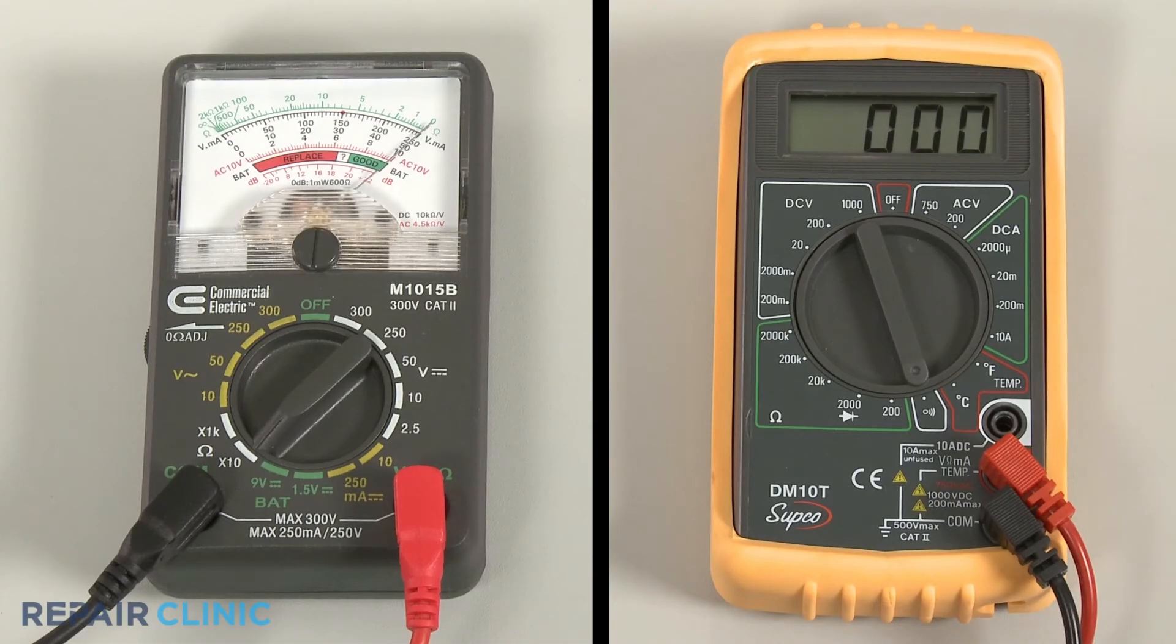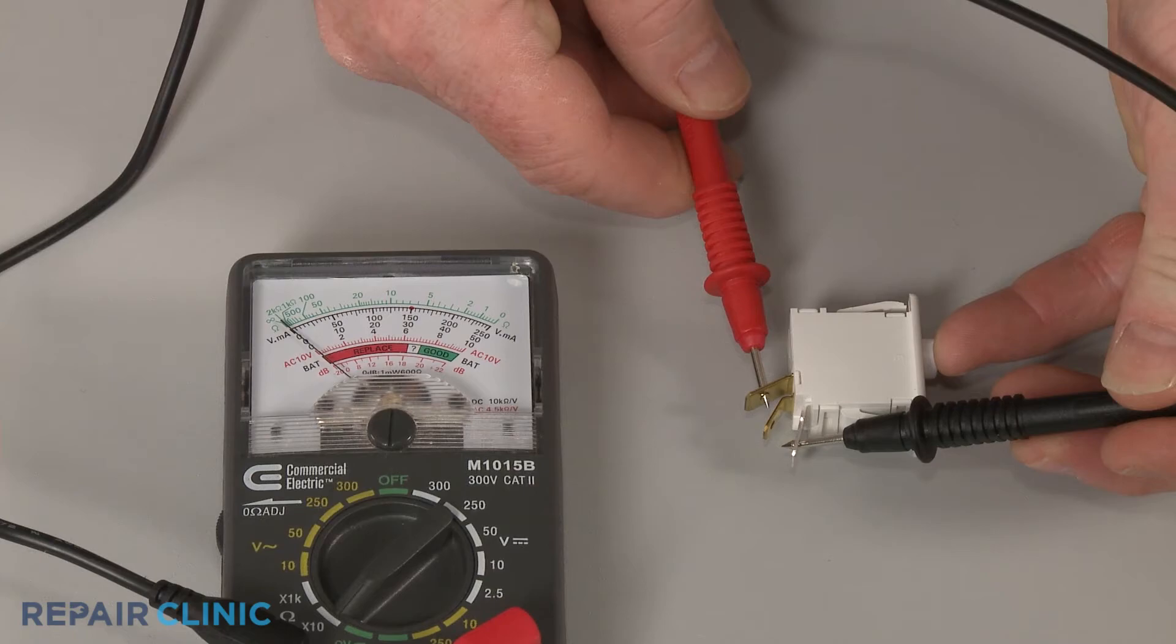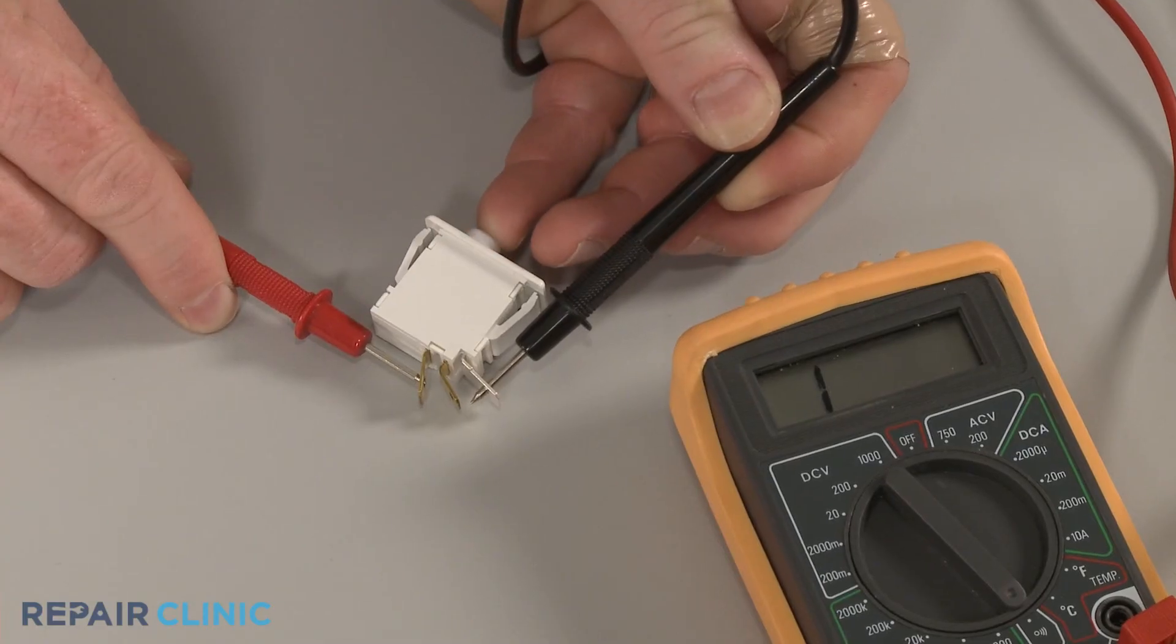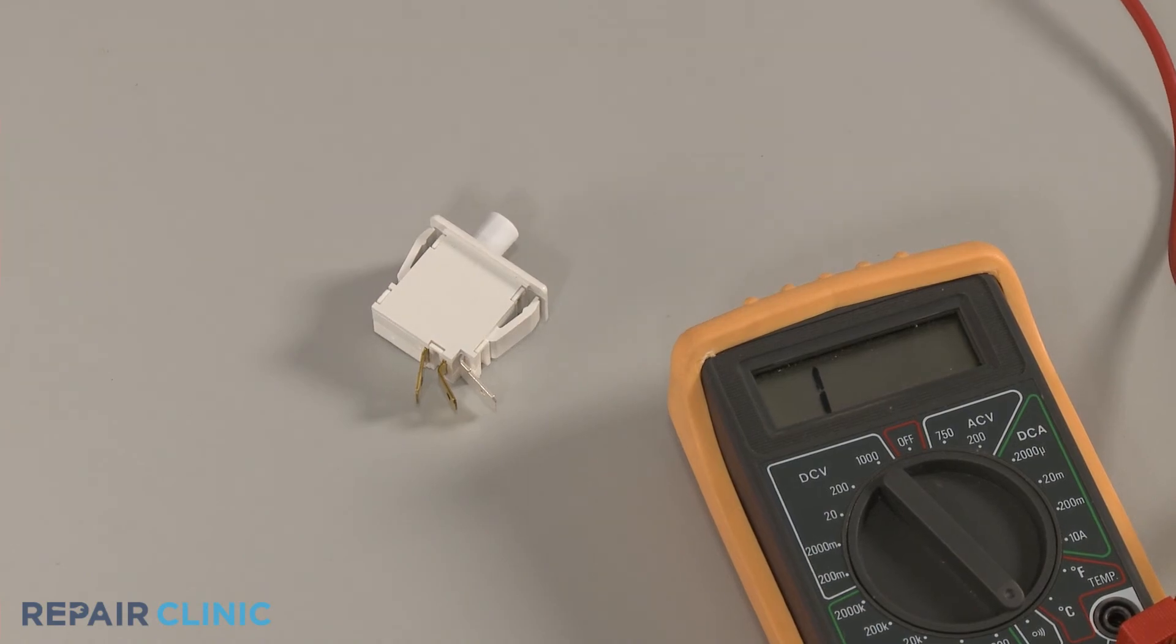If the meter reading shows zero ohms of resistance, the switch has continuity. If the needle does not move, or the digital display does not change significantly, there is no continuity, which means the switch is defective.